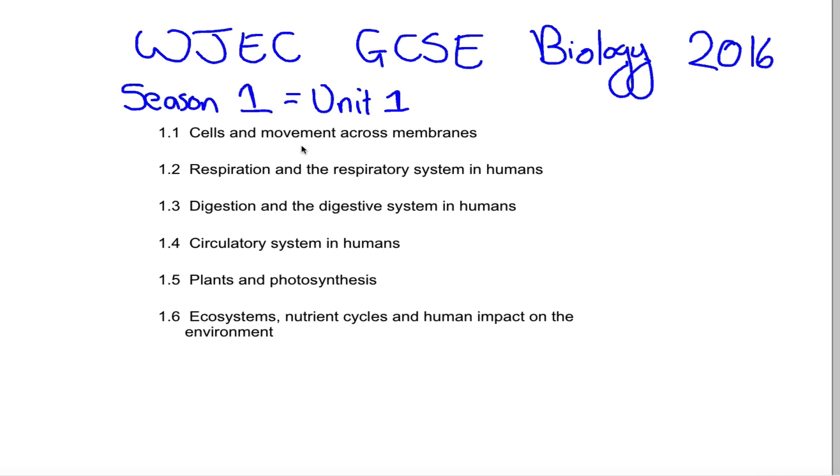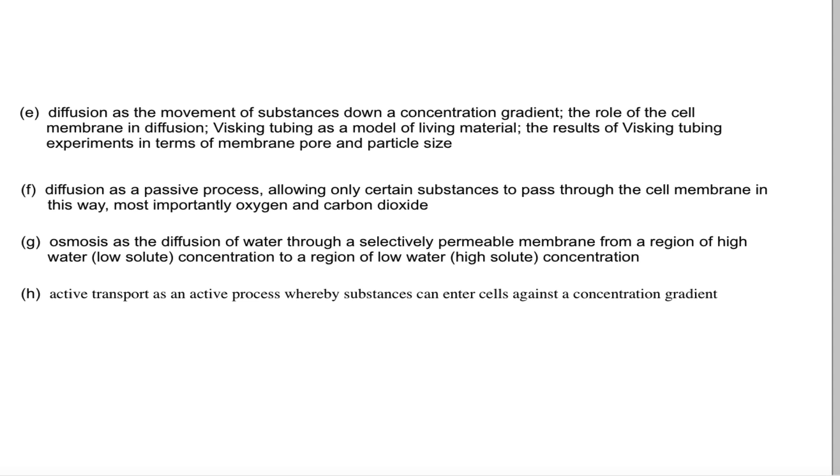Hello and welcome back, this is unit 1 WJEC GCSE Biology. In particular, we're looking at cells, movement across membranes, and we're going to look at the three ways in which substances can cross the cell membrane. So this is diffusion, osmosis, and higher tier only, although I'm going to cover it in this video - active transport.